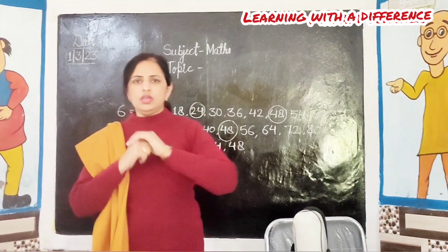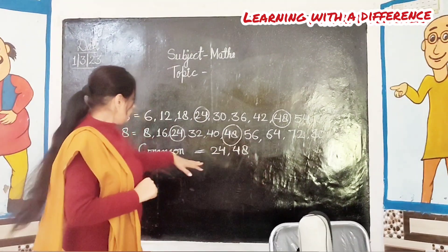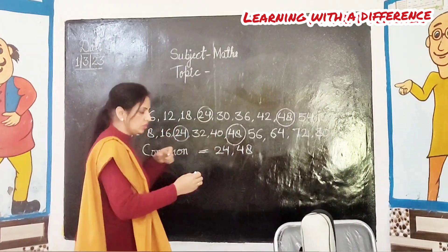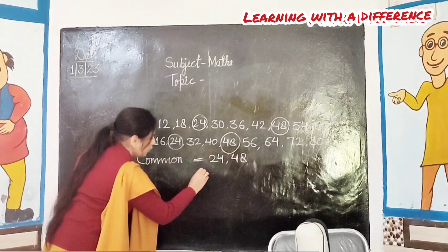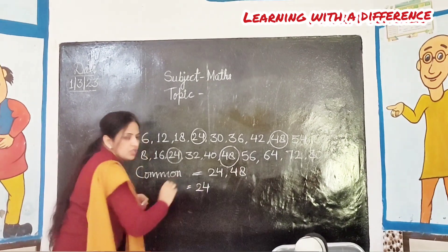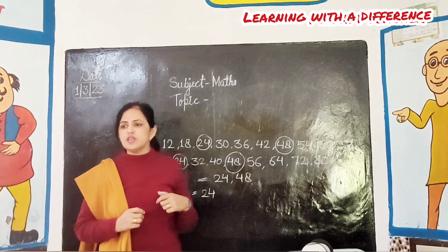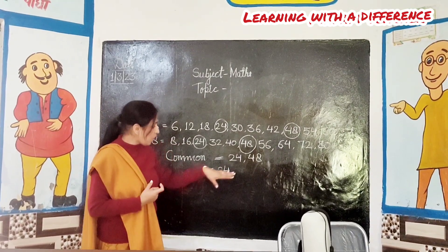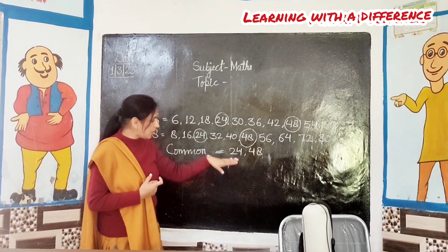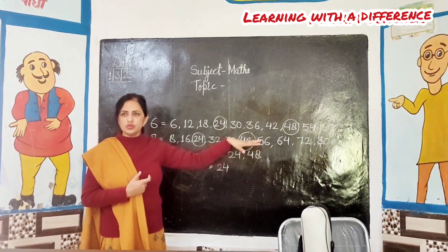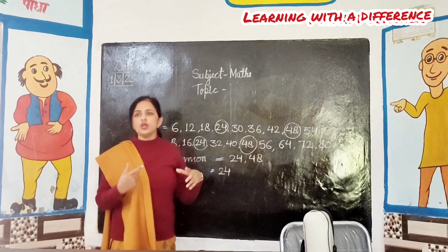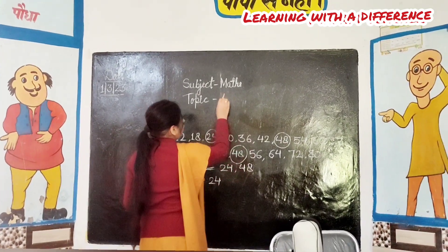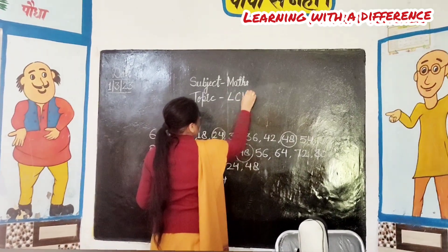24 and 48. Okay. Now tell me, 24 and 48 — which one is the smallest number? 24. 24 is the smallest number. See, everybody — what do we call the smallest number? What do we call the smallest number in both the tables? Today we will know what is LCM.